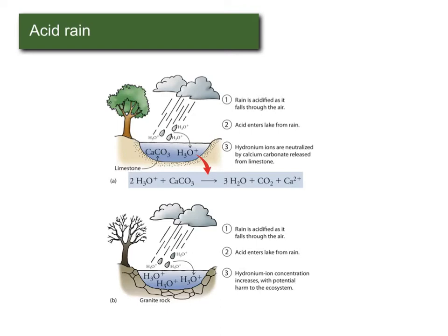If a lake or ocean is lined with something like granite, which doesn't react, the H3O+ just keeps building up, causing problems for ecosystems. Fish, crabs, and other sea life are very tuned to a specific environment, and even a shift of a few pH units can be deadly. And because of how ecosystems interact, affecting something low on the food chain impacts everything higher up as well.